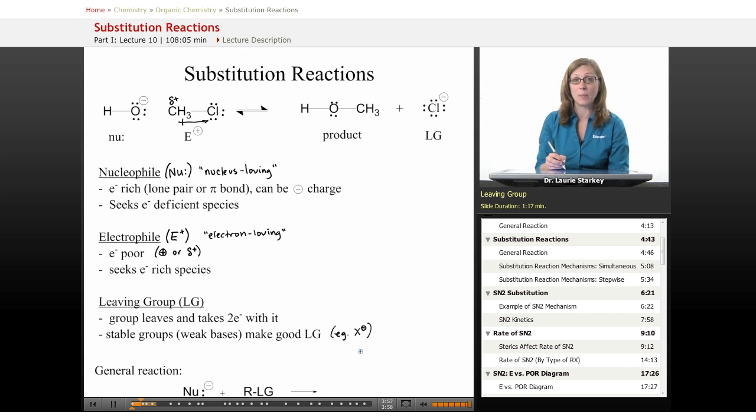If you look at HCl, how do we describe HCl? We know that is a strong acid. That tells us that the conjugate base chloride is a very weak base, very stable, and so they make very good leaving groups.